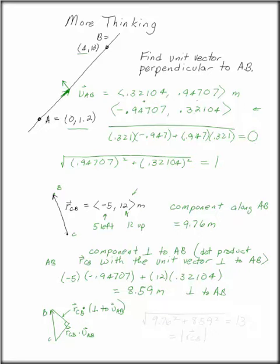Now, you can check this with the Pythagorean theorem. Is it, in fact, true that 9.76 squared plus 8.59 squared is our original magnitude? And in point of fact, yes. This is the magnitude of rcb.